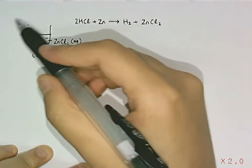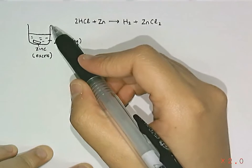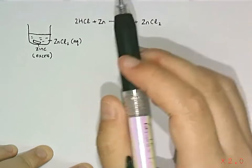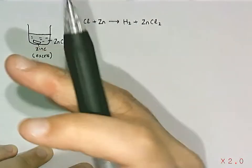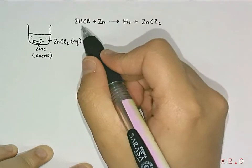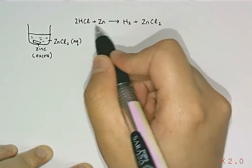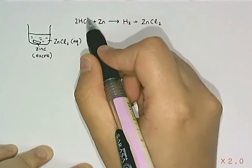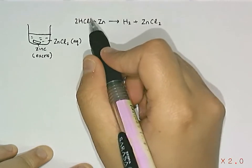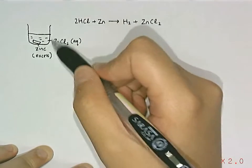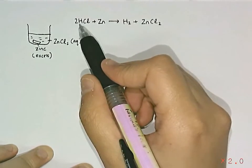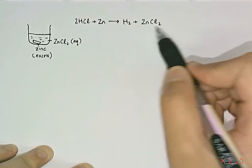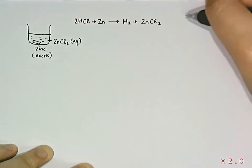In this experiment, I am going to add an excess of zinc so that I use up all of the hydrochloric acid. That way when I get the product, I won't have a mixture of hydrochloric acid and zinc chloride together. If not, it would be very difficult to separate them.